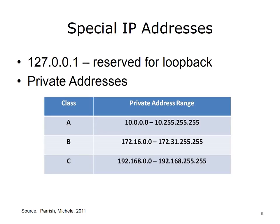IPv4 addresses are broken into five classes: A, B, C, D, and E. Classes A, B, and C are assigned to networks. Class D addresses are used for multicasting, which will be explained shortly. Class E is for experimental purposes. The first octet, or first eight bits, of an IPv4 address determines what class the address belongs to. If the first octet falls between 0 to 127, it is a class A address. 128 to 191 is class B. 192 to 223 is class C. 224 to 239 is class D, and 240 to 255 is class E.